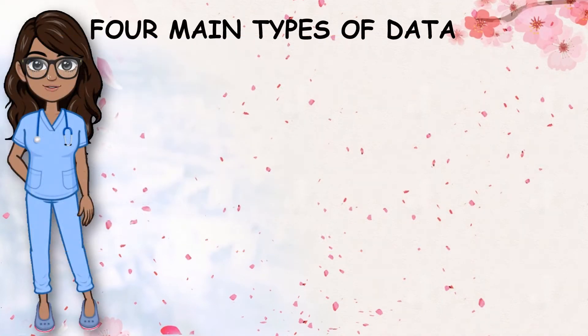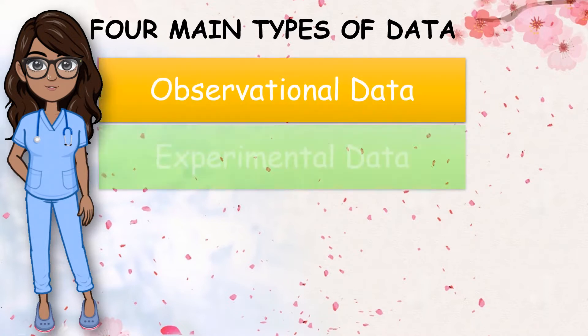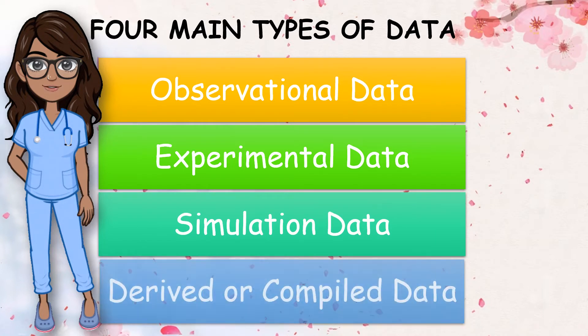Generally, data may be classified into four main types: observational, experimental data, simulation, and derived or compiled data.